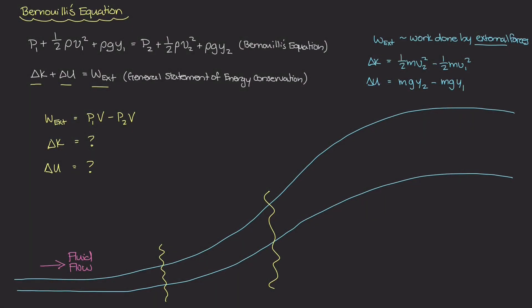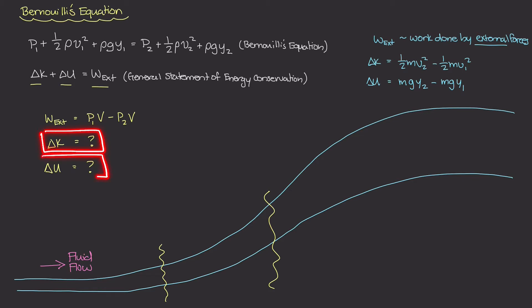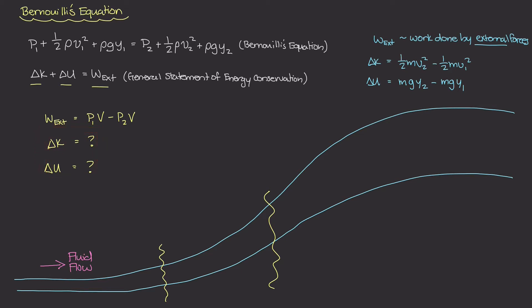Welcome back. In the last video, we figured out what the external work was on this little system that we were studying for this flow, and we still have yet to figure out the kinetic energy term and the gravitational potential energy term. In the last video, we found that the external work for this system was the pressure at 0.1 times volume minus the pressure at 0.2 times volume.